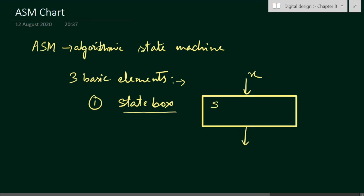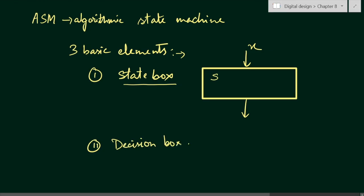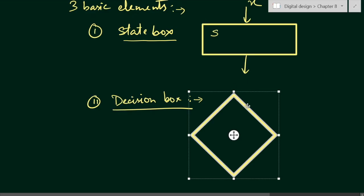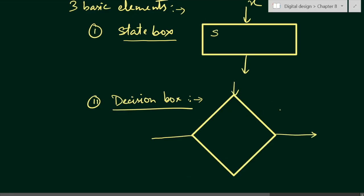The second basic element is the decision box. As the name says, it takes a decision depending on the inputs. This decision box has a diamond shape. It will have two outputs, either 0 or 1. It will take the decision depending on input X and go either towards 1 or towards 0, showing the effect of the input on the control system.